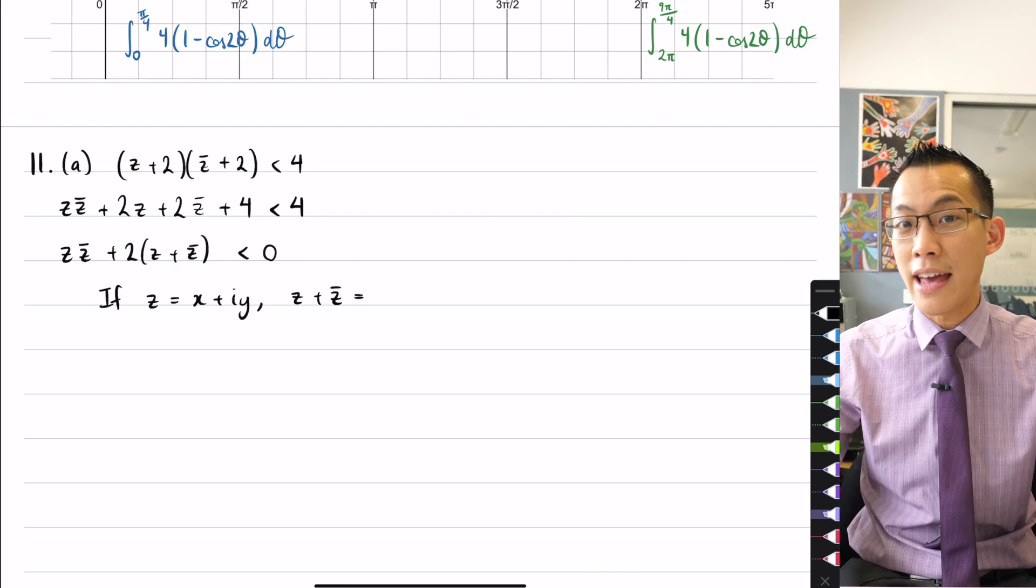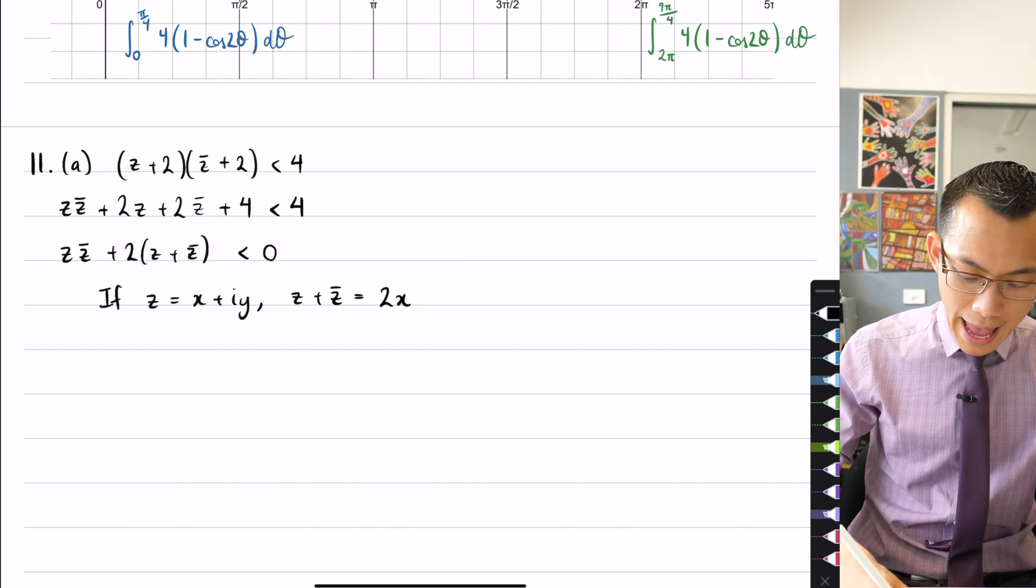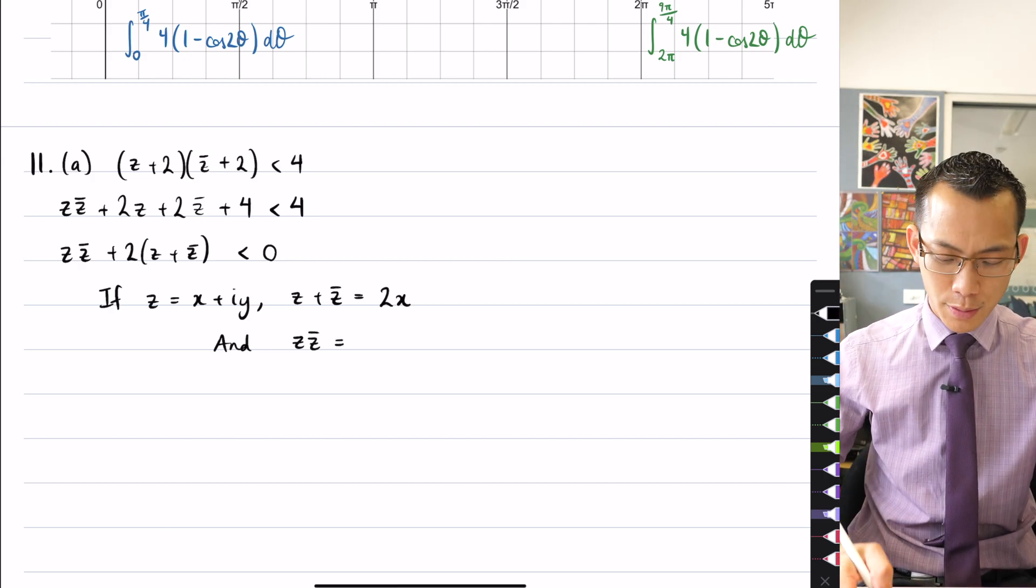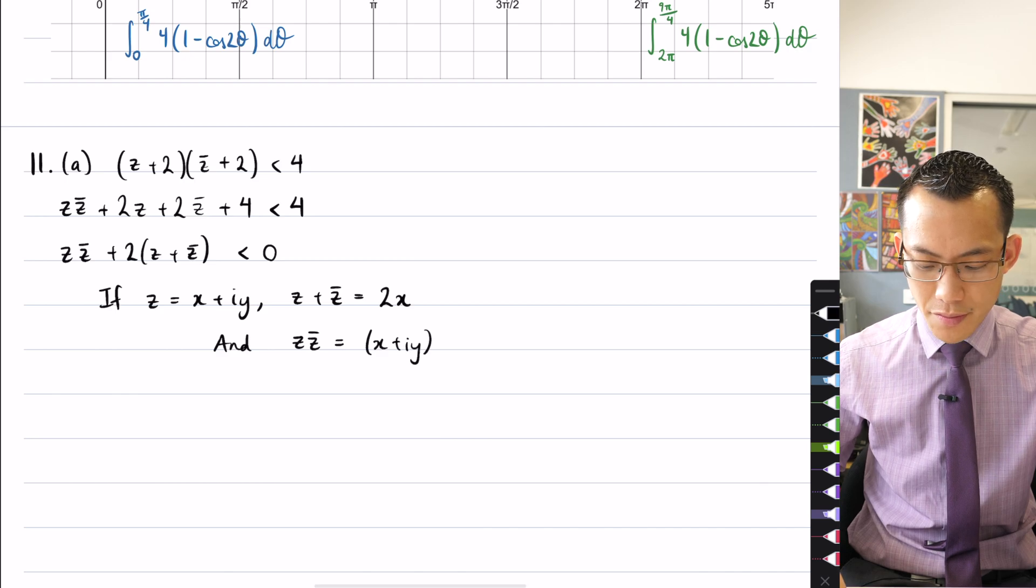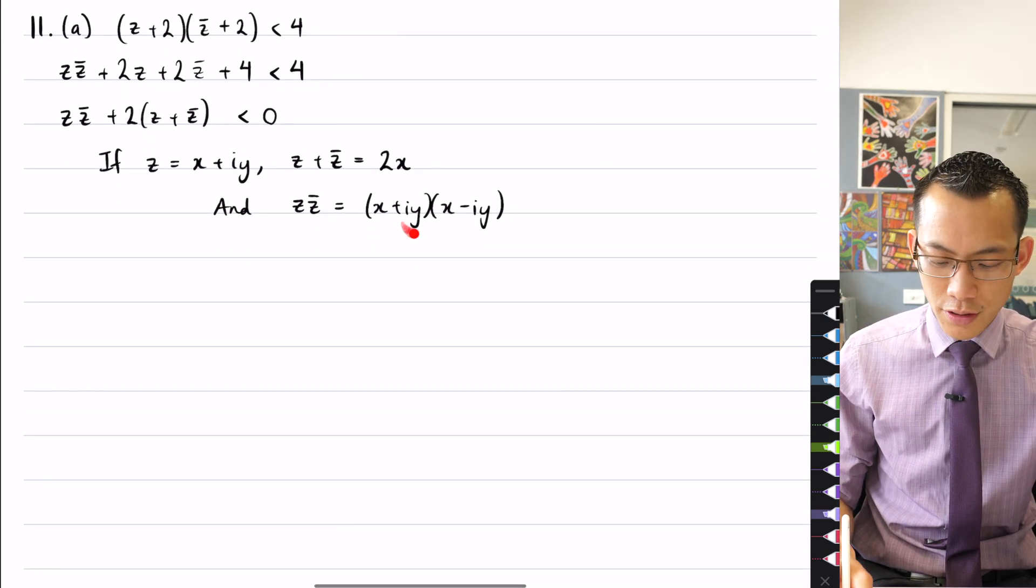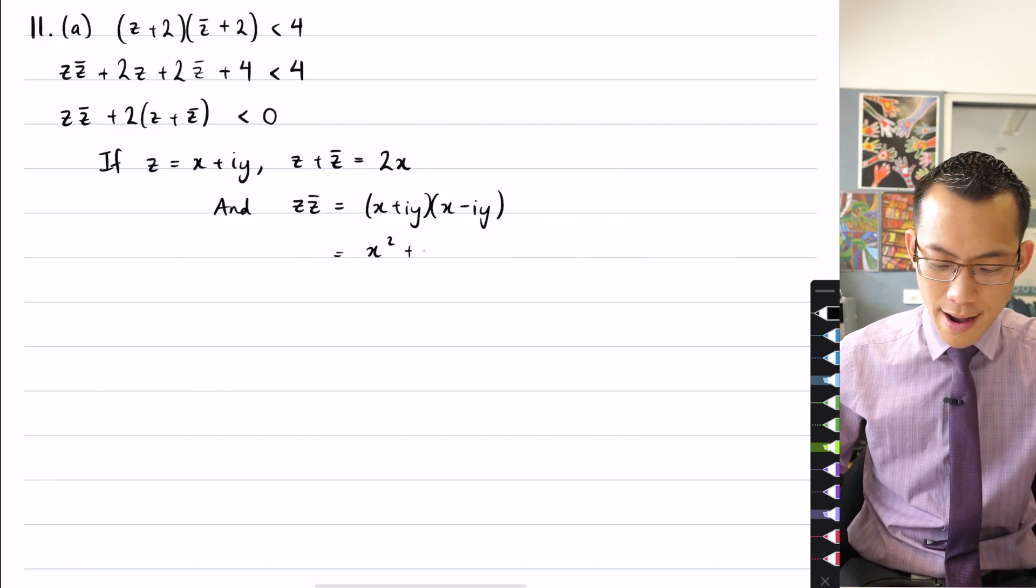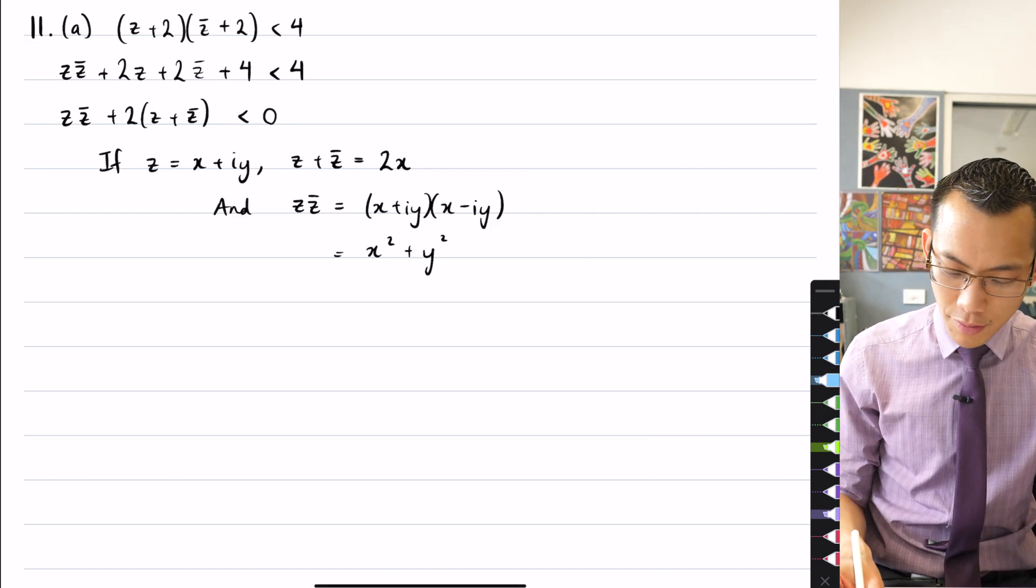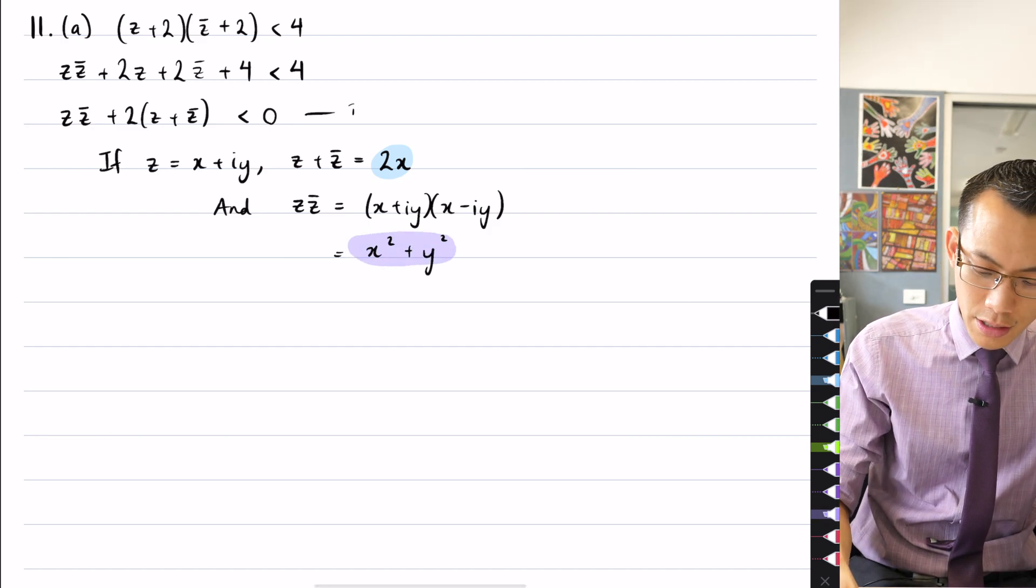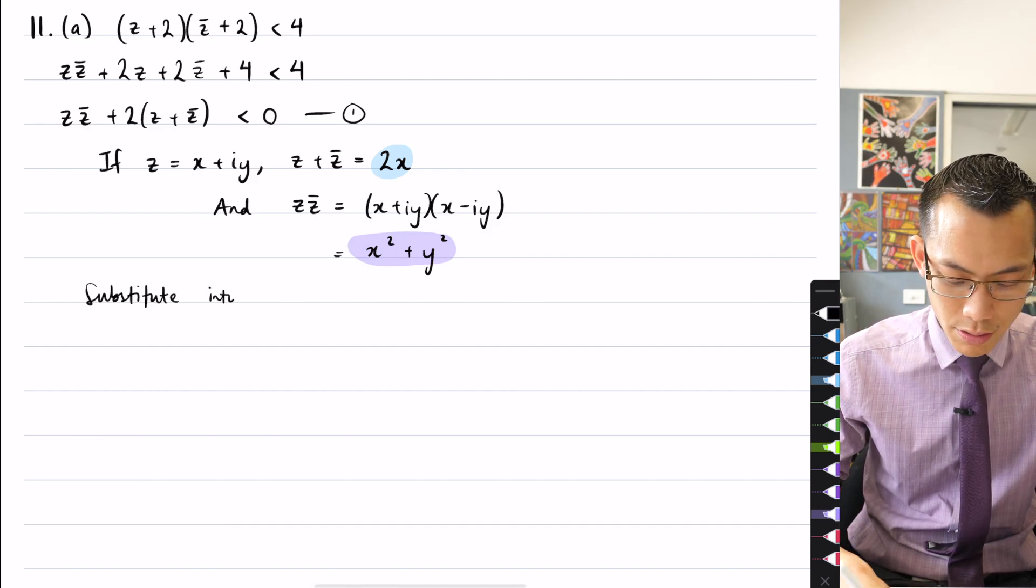We just said the imaginary parts will cancel, so that will just leave you with double the real part. So I'm just going to get 2X. And while I'm at it, Z times Z bar, maybe you don't get this one straight away, that multiplication is going to be X plus iY, X minus iY. This is kind of a difference of squares situation, except the fact that I've got these i's hanging out there, so they're going to make my difference of squares into a sum of squares, because the i squared will become negative 1. So what I'm going to do is I'm just going to flag these two objects here, and I'm going to substitute them into, let's just name this, let's call this inequality 1, and I'm going to substitute these two results in terms of X's and Y's into inequality 1.